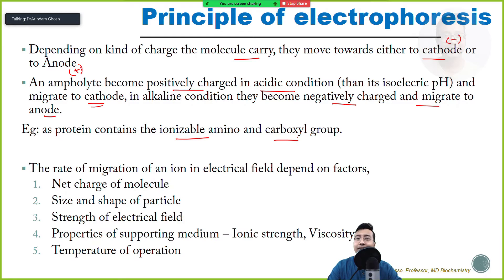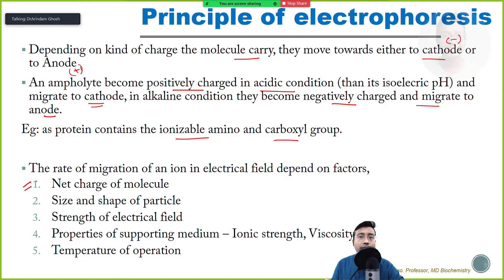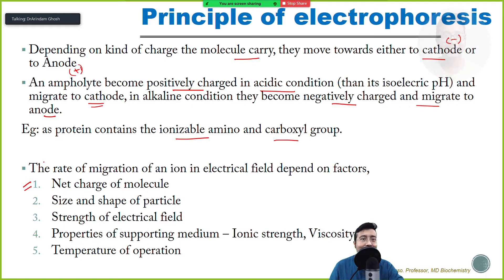The charge alone does not determine movement - charge is one factor. The net charge of the molecule is the primary determining factor because we are using an electric field which acts on charges. But imagine two molecules having the same charge - will they remain static or move side by side? No. So there comes the role of other factors. Number one: net charge. Number two: size and shape of the particle. Number three: strength of the electric field - a very weak field means particles move very slowly, a very strong field means they move rapidly.